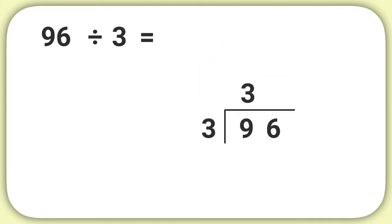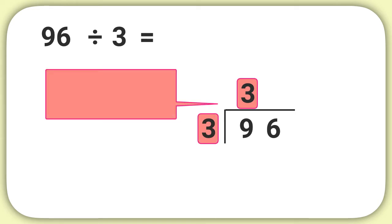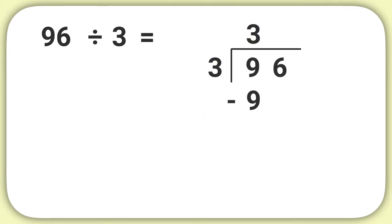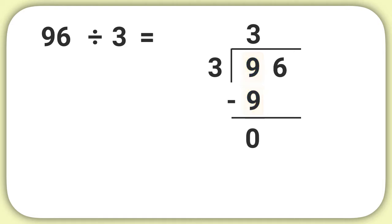We can write that into our problem. Now that we have divided, the next piece is to multiply 3 times 3. When you solve this, what do you get? Well, 3 times 3 equals 9, and we will write that into our problem. Next we subtract: 9 minus 9 is 0. Then we have to bring down the next digit, the 6.